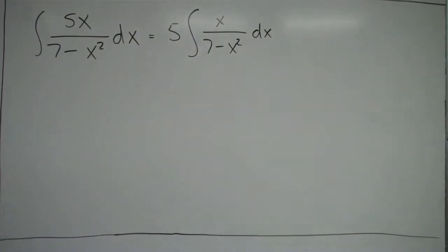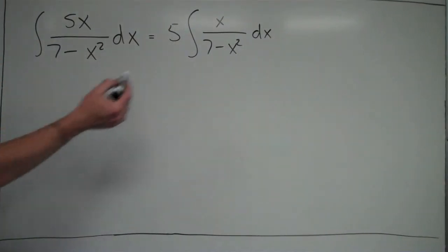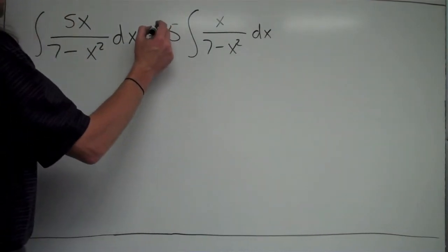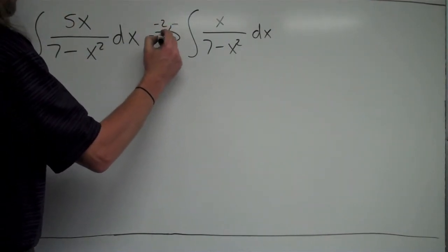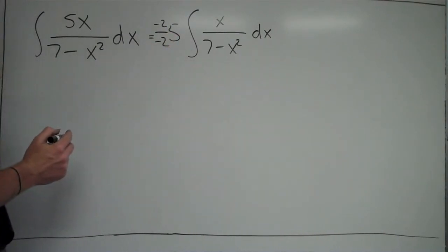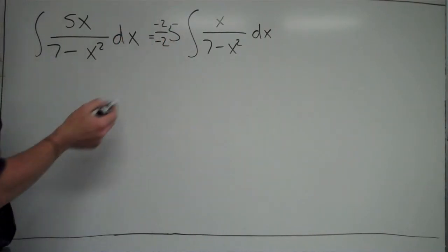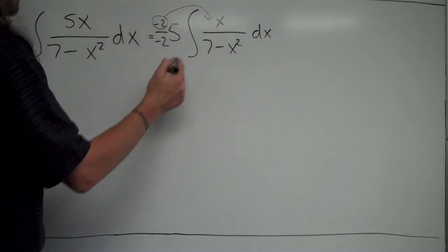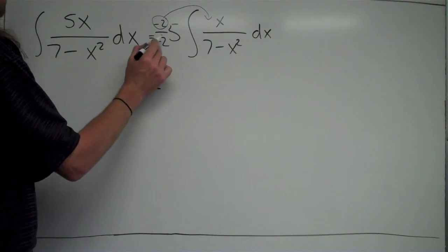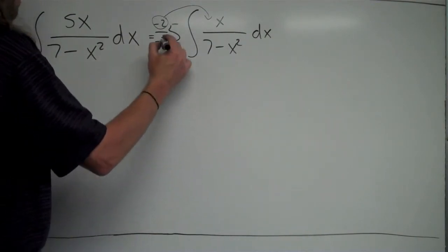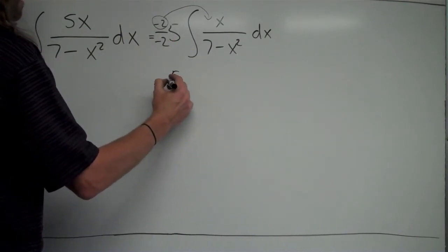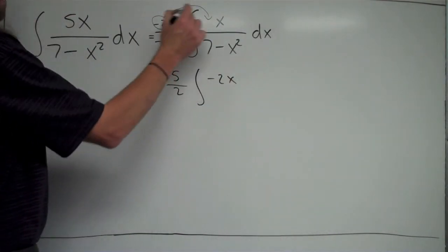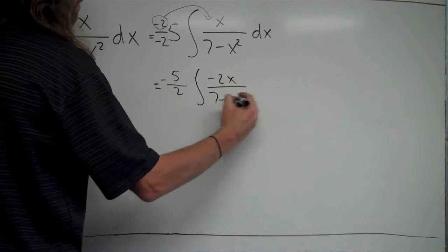Now I have it set up so the top is just x, and I want the top to be negative 2x, because the derivative of the bottom is negative 2x. So I'm going to multiply outside the integral by negative 2 over negative 2 — I'm just multiplying by 1, not changing the value at all. I'll take the negative 2 inside, so on the outside I'll have negative 5 halves, times the integral of negative 2x over 7 minus x squared.